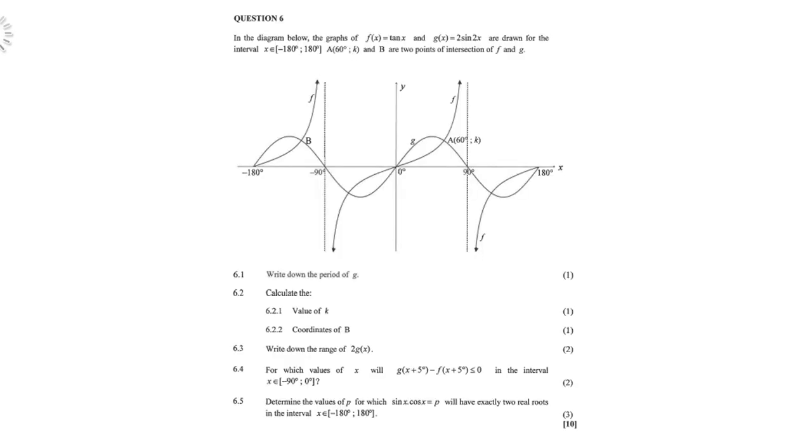Right, question 6. In the diagram below, the graph of f(x) equals 10x and g(x) equals 2sin2x are drawn for the interval negative 180 to positive 180. Point A is given as 60 degrees and k, and B are two points of intersection of f and g. 6.1, write down the period of g. 6.2, calculate the value of k and the coordinates of b.